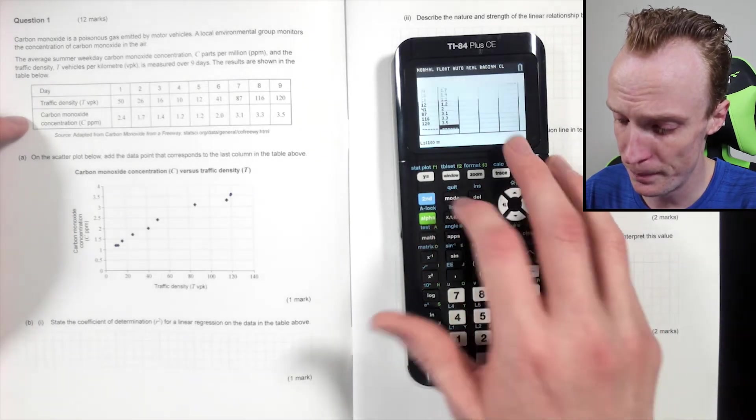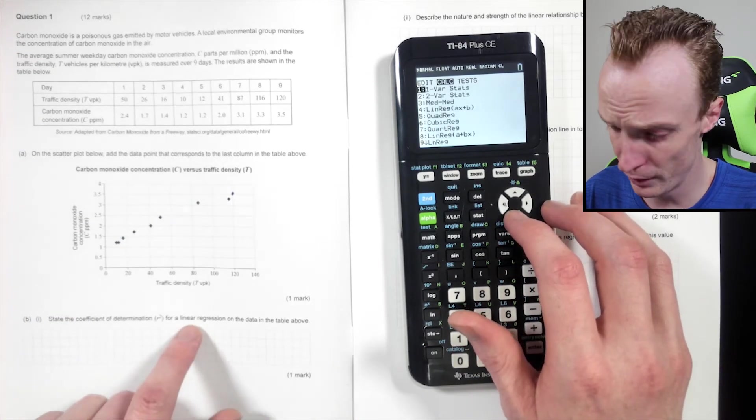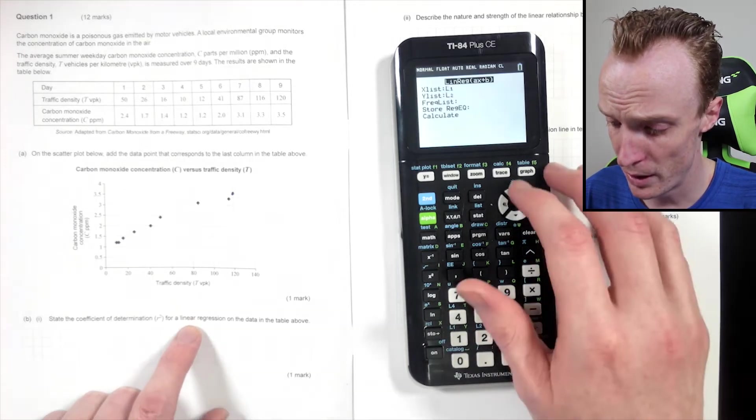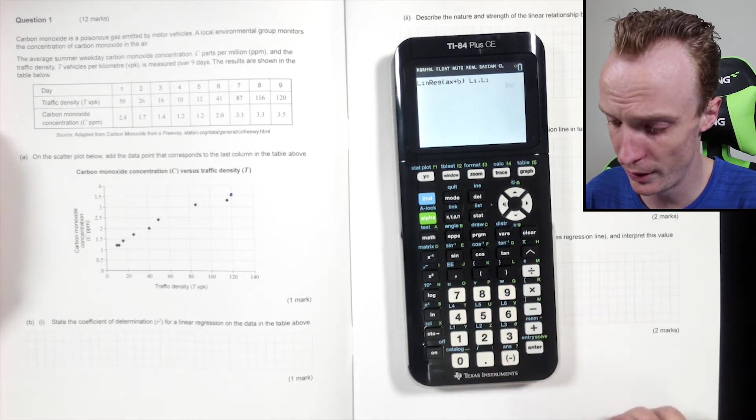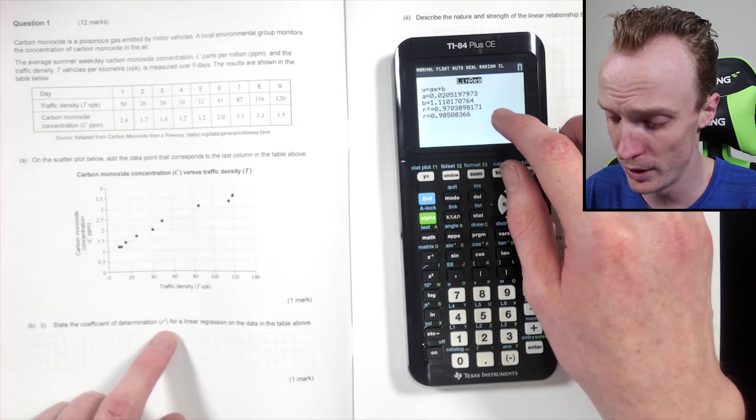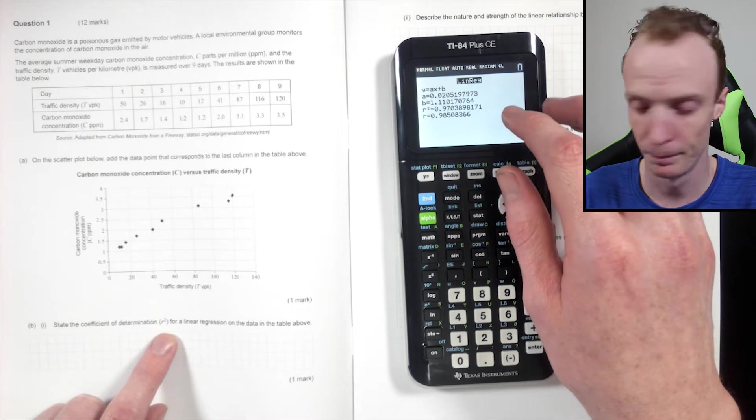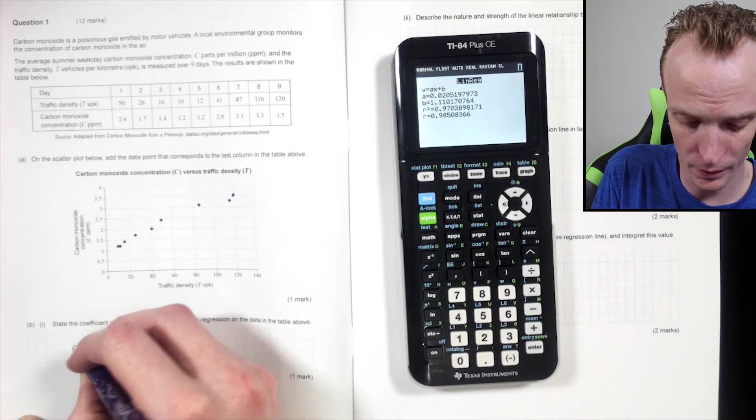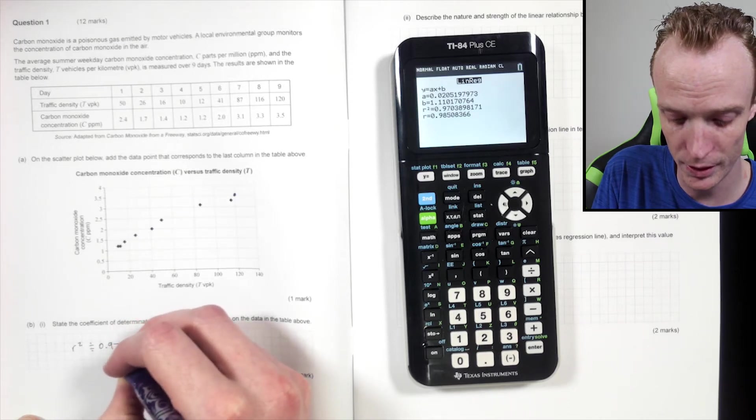Once you've done that, if I second quit out of it, go to my stat, my calculate. Now I'm looking for a linear regression model here, so that's the linear regression model there. My x are put into list one, my y was list two. So if I calculate this now it will give me the actual equation plus the r squared value which is what it's wanting, which is approximately 0.97. So over here my r squared value is approximately equal to 0.97.